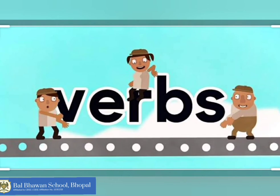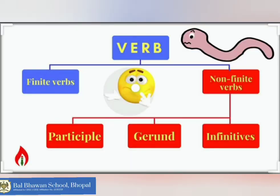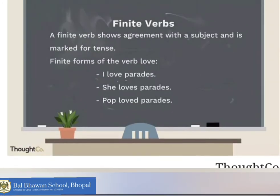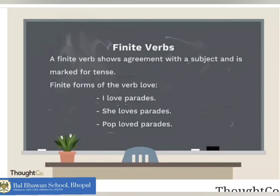In English grammar, we can fairly divide verbs into two forms: finite and non-finite verbs. In today's lesson, we will learn about finite verbs. A finite verb is a form of a verb that shows agreement with a subject and is marked for tense.